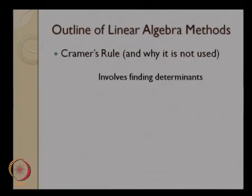The first thing that we started off with was Cramer's rule. Cramer's rule involves finding determinants and finding determinants is extremely computationally complex. As a result, Cramer's rule is not used beyond say the 4 or 5 dimensional systems.